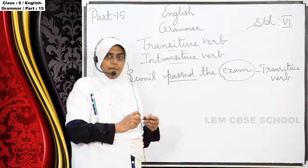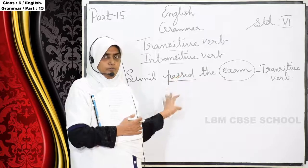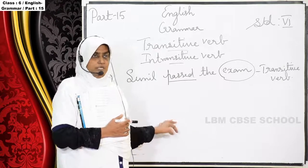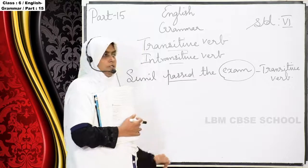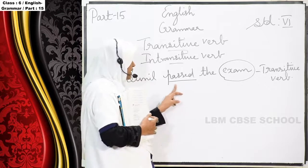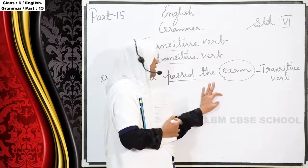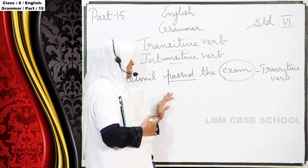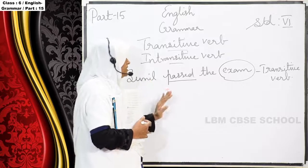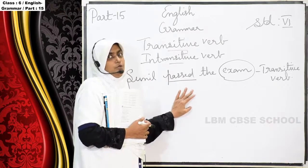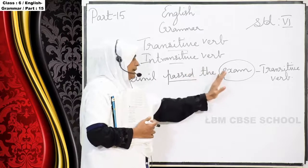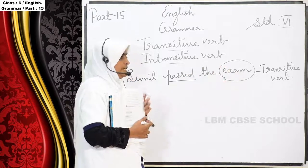There are so many examples in your textbook — I am teaching you a few only; you have to go and do the exercise by yourself. So here: 'Sunil passed the exam.' Subject is Sunil, 'passed' is the verb — we underline the verb — and 'exam' is the object, which we circle. The verb takes the object, so we call it a transitive verb.